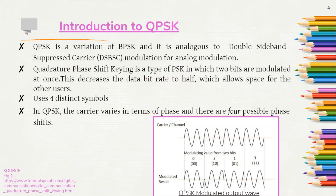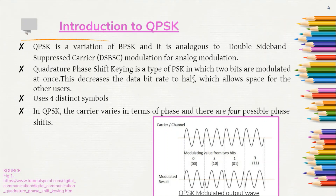Introducing you to QPSK. QPSK is basically a digital modulation technique. It is slightly different from the binary phase shift keying which is BPSK, and it is analogous to the double side band suppressed carrier, i.e. DSBSC modulation which we use for analog signals. In QPSK, two bits are modulated at once. This means it reduces the data bit rate to half, which allows space for other users. Modulating two bits at once means we can have four different symbols and hence four possible phase shifts for the carrier phase.